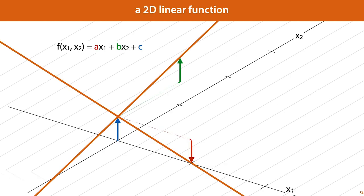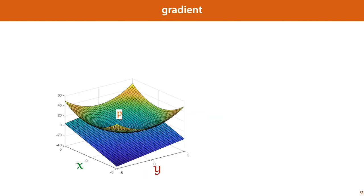When we express a linear function, we essentially get one slope for every dimension in the function. So here we have a function of two parameters, which gives us two slopes a and b. So if we find the tangent hyperplane of a function in two dimensions, we're looking for two slopes — one in the direction x, one in the direction y, plus a bias. To work out the slope in the x direction, we simply take y to be a constant and take the derivative with respect to x. To work out the slope in the y direction, we take the derivative of the function with respect to y, and take x to be a constant.